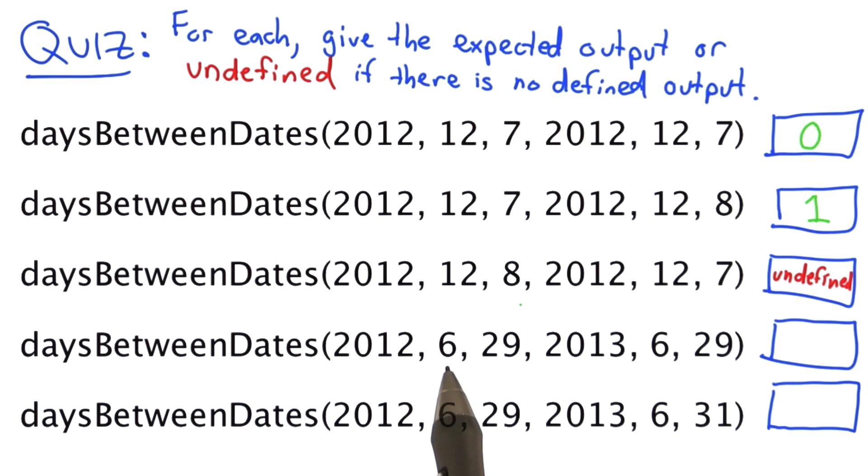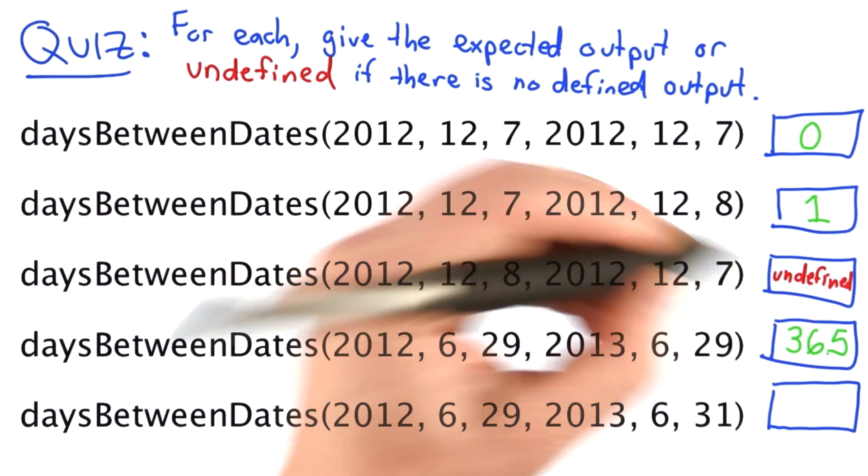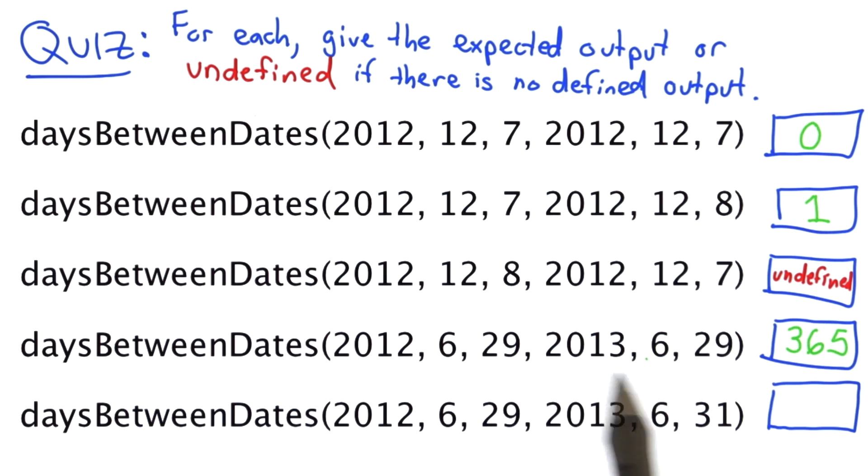For the fourth one, the dates are a year apart. June 29, 2013 is one year after June 29, 2012, so they're 365 days in a non-leap year because the February that's included is the February in 2013.